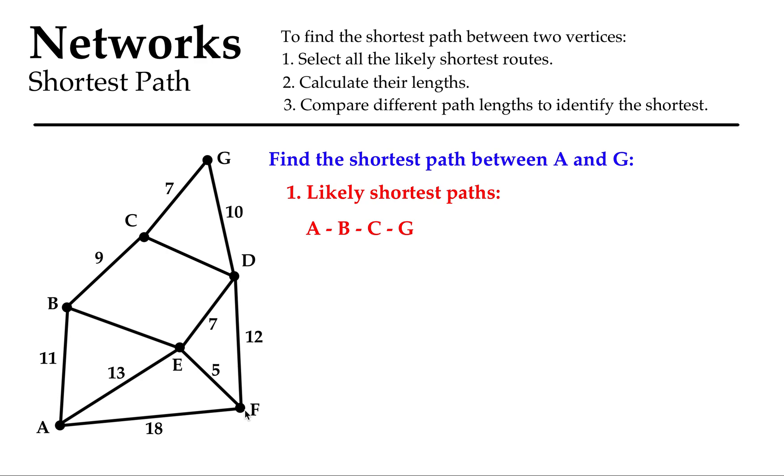We've got A to B to C to G. That's one likely shortest path. I'm going to illustrate it with my fancy red thing.